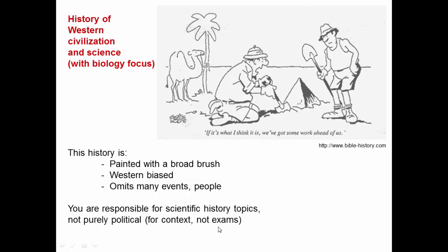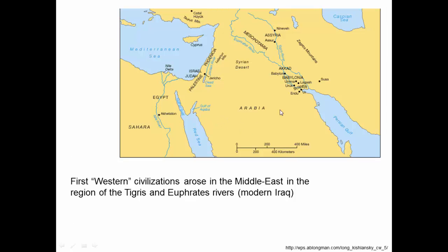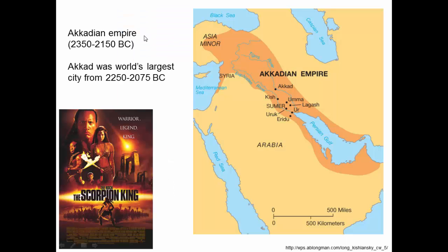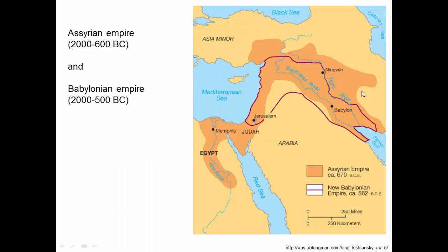First up: the first western civilizations rose in the Middle East in the region of the Tigris and Euphrates — these two rivers in what is now modern-day Iraq. This is where the first complex divisions of labor arose. The first big empire is the Akkadian Empire, about 4,000 years ago. Akkad was the world's largest city, and the Akkadian Empire stretched throughout the region, followed by the Assyrian and Babylonian Empires.